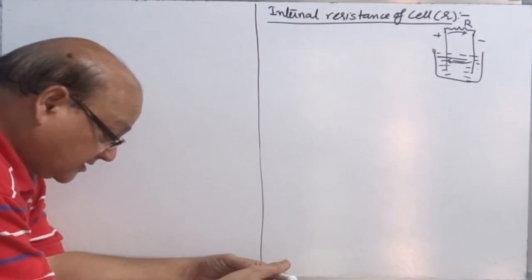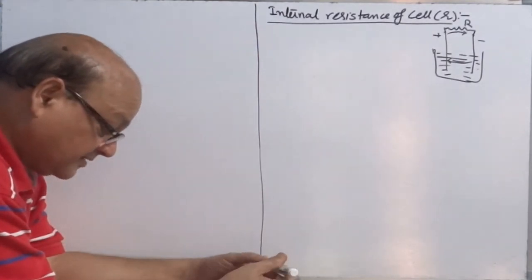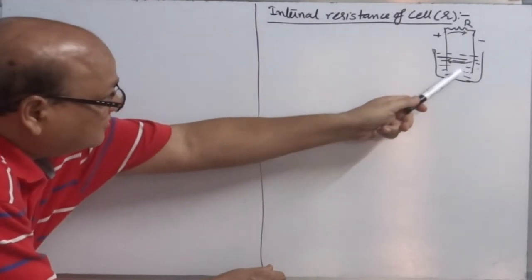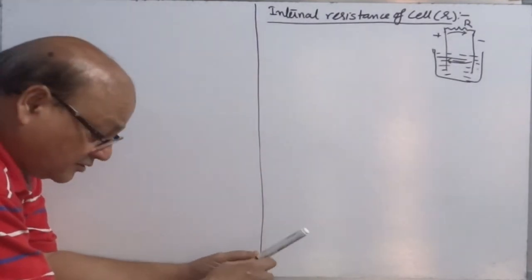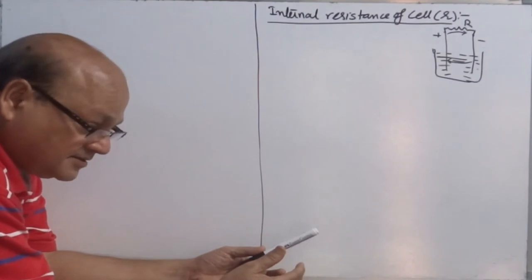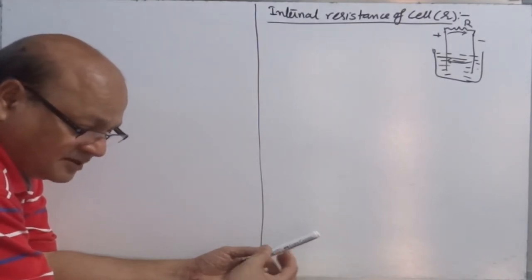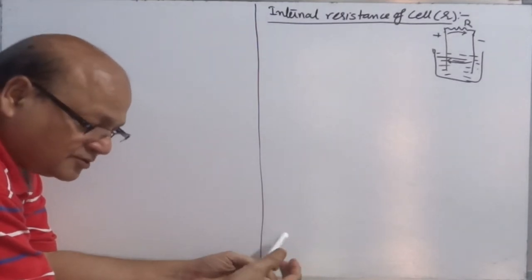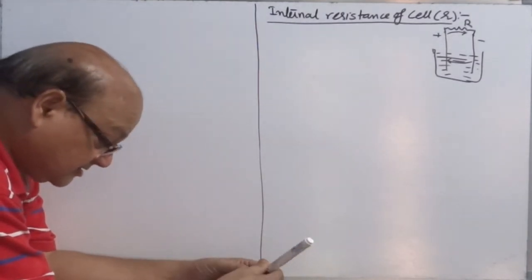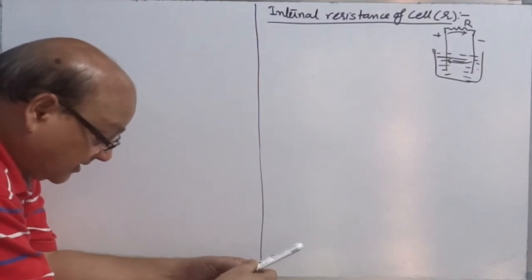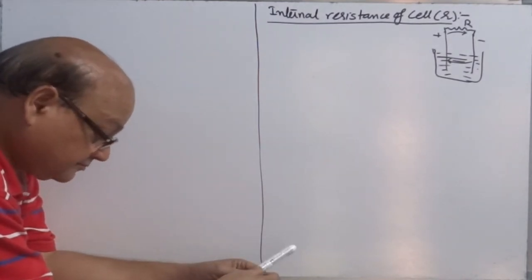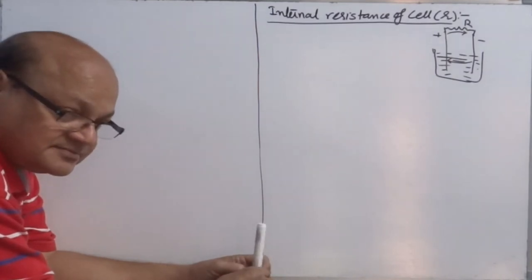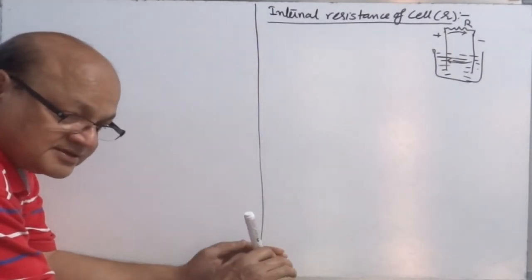Now, what are the factors on which internal resistance depends? Number one: separation of electrodes. If electrodes are far apart, ions have to travel a larger distance and their motion is obstructed more and more, so internal resistance increases. Number two: temperature of electrodes. When temperature rises, internal resistance decreases.